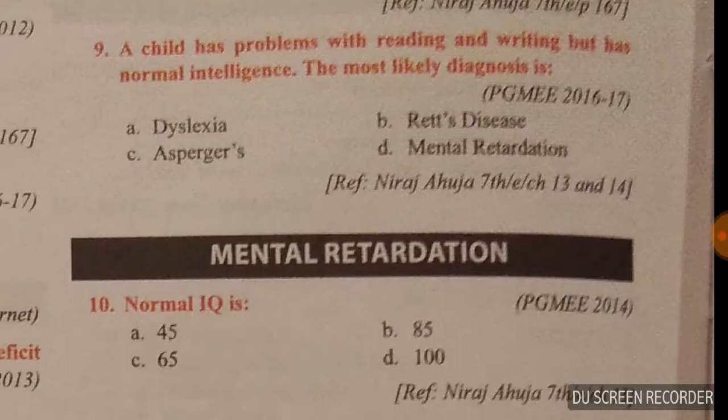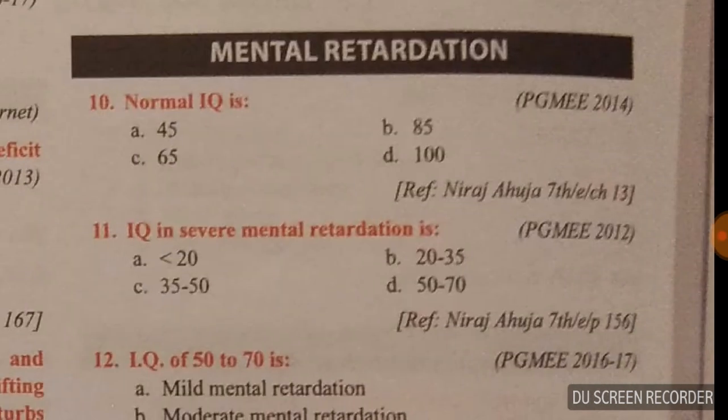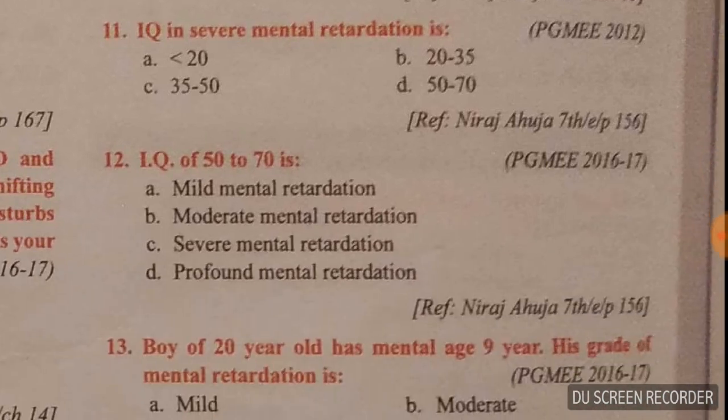Question number nine: a child has problems with reading and writing but has normal intelligence. The most likely diagnosis here is dyslexia, option A is the right answer. Question number ten: normal IQ is 100, option A is the right answer.